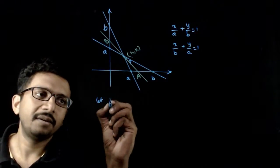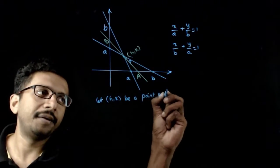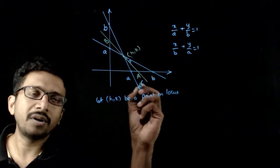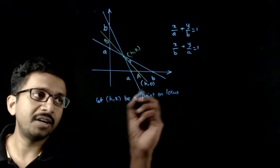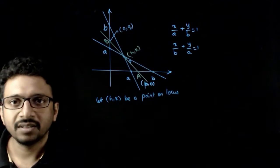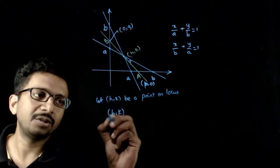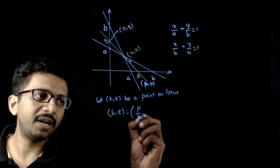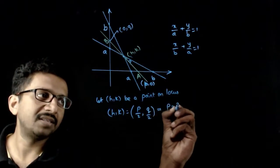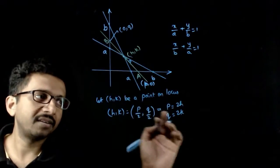Let (h, k) be a point on the locus. If (h, k) is a point on the locus, this has to be the midpoint of A and B. Let the coordinates of A be (p, 0) and the coordinates of B be (0, q). Since (h, k) is the midpoint of AB, we get h = p/2 and k = q/2, which implies p = 2h and q = 2k. That means the intercepts of the line AB are 2h and 2k.